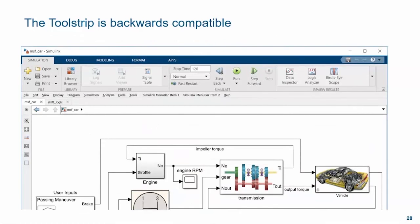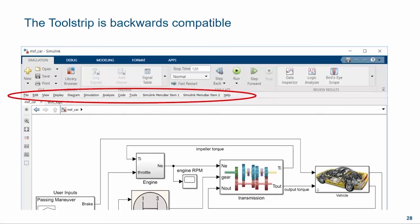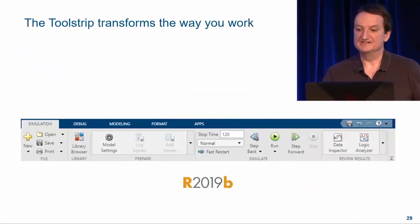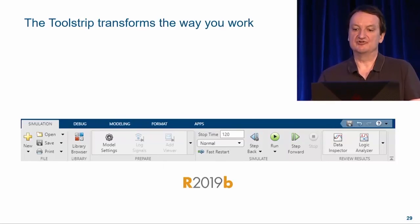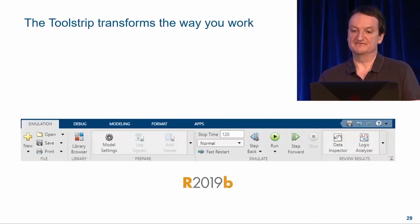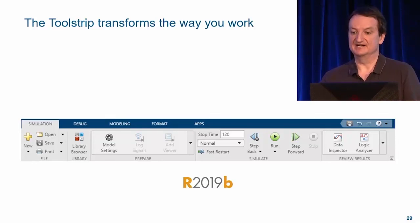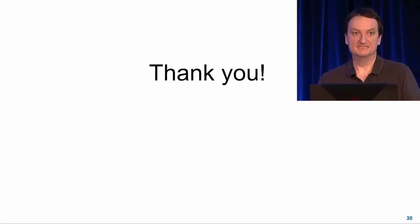This is the largest overhaul of the Simulink user interface since the unified editors brought Simulink and Stateflow together in 2012. We have gone to great lengths to ensure that the toolstrip is backwards compatible with all user code, including Simulink menu customizations. The toolstrip is the next generation of user interface for Simulink and Stateflow. It will transform the way you work with our tools, and it will serve as a foundation for growth as our features continue to deepen and diversify. We are extremely excited to get it into your hands in 19B. Thank you.